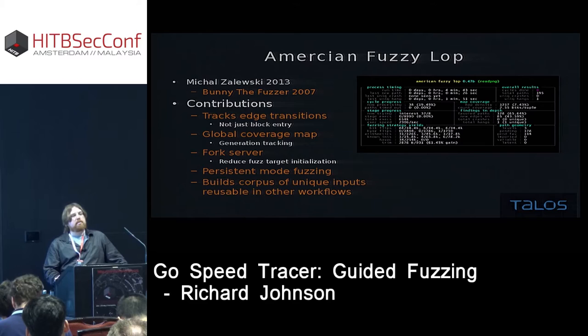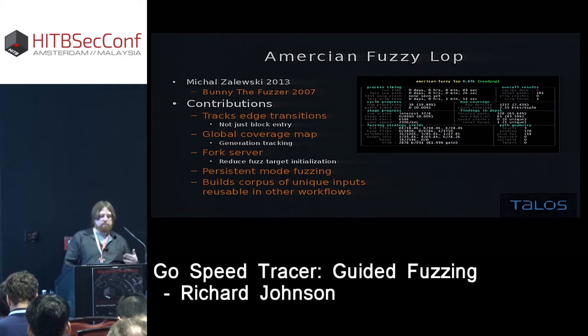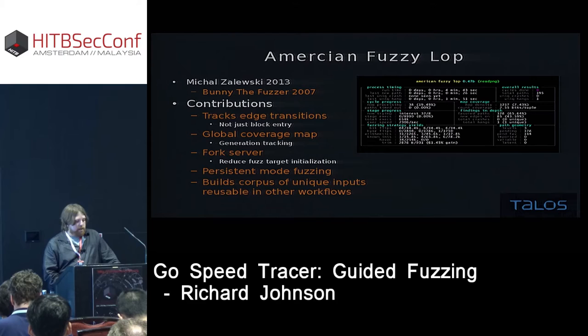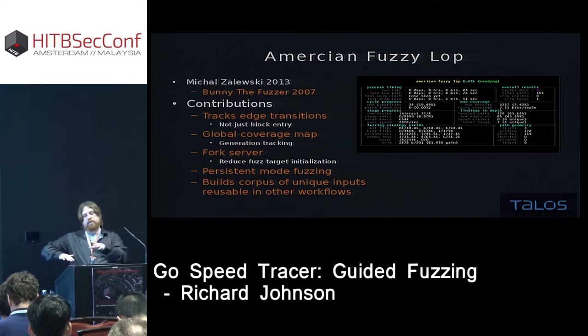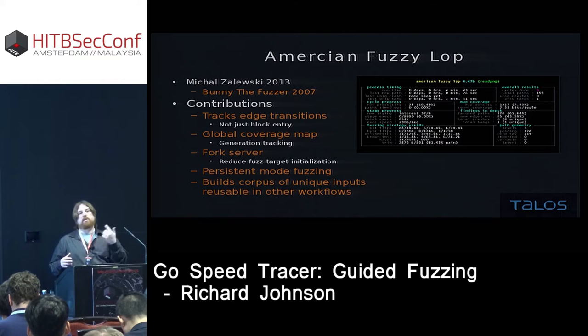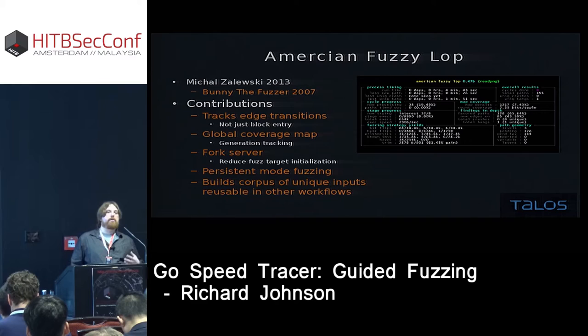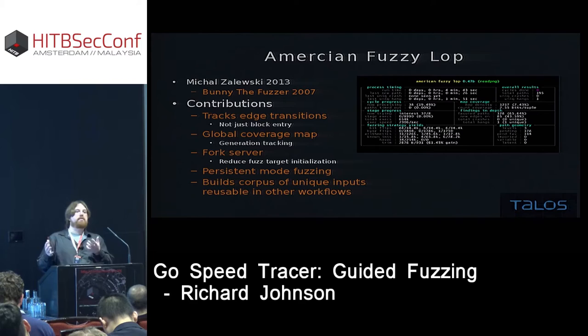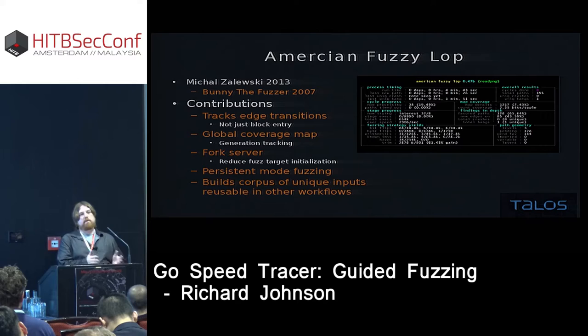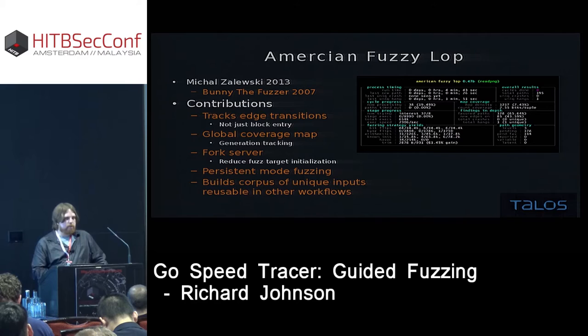AFL brought a fork server into the mix, which is a much more efficient way of spawning processes. On Linux you get copy-on-write duplication of the address space, so you can spin up a new process almost instantaneously. It also has persistent mode fuzzing, which lets you directly instrument specific functions to start fuzzing at, then loop back after memory cleanup. I'm working on something similar for Windows using thread generation — identifying where the thread create occurred that reads the input of interest, allowing that thread to respawn.